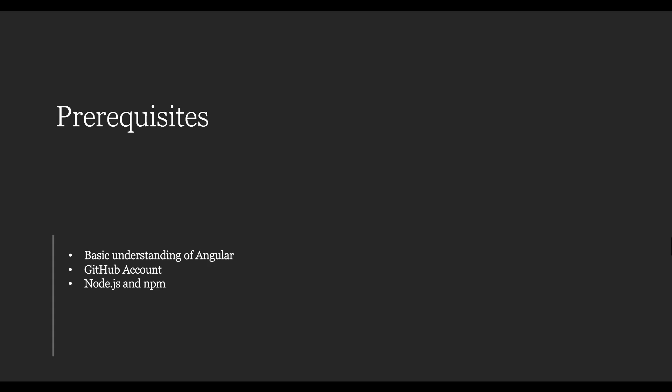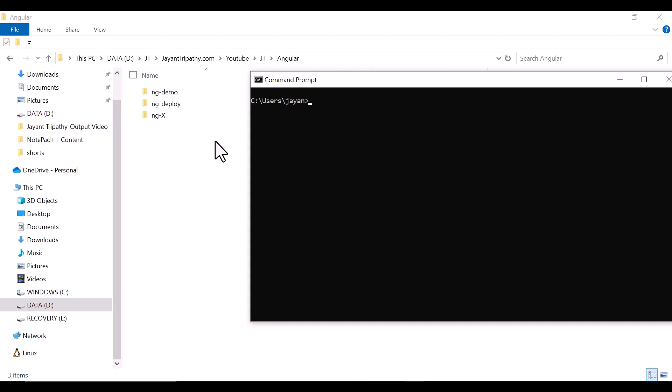To push the code into GitHub, let's create an Angular application from the Angular CLI and then push that code into GitHub, where we'll deploy it via GitHub Pages. In this demo we are going to create an Angular 17 application and deploy it into GitHub Pages.